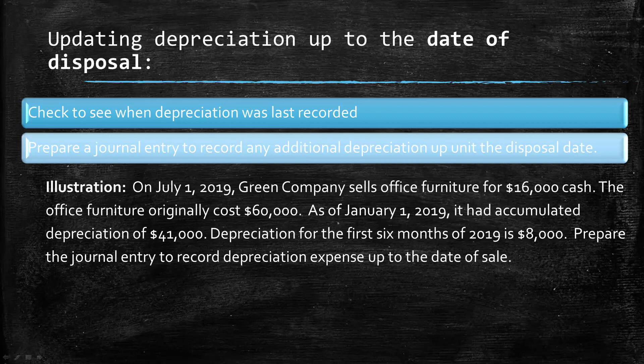On July 1, 2019, Green Company sells office furniture for $16,000 cash. The furniture originally cost $60,000. And as of January 1, 2019, it had accumulated depreciation of $41,000. So now we can see that depreciation had been recorded through January 1. They're disposing of the asset on July 1. Depreciation for the first six months of 2019 is $8,000, so we need to do the journal entry just for those first six months.